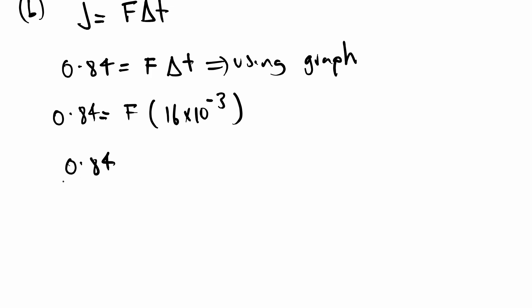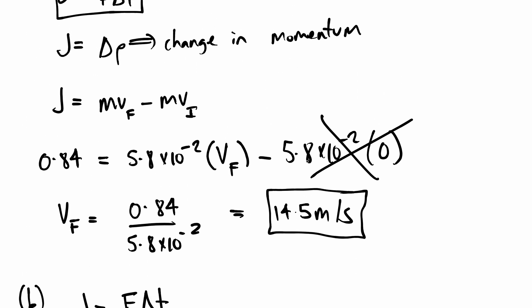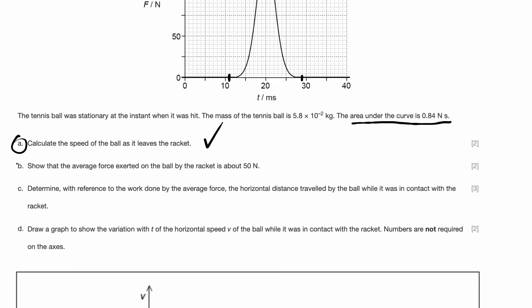I know 0.84 is equal to F times T, I can write 16 × 10⁻³. Why negative 3? Because it's in milliseconds, I need it in seconds. If I put this in my calculator, 0.84 divided by 16 × 10⁻³, I get my answer to be about 52.5 Newtons, which is approximately 50 Newtons. Hence, that's what they wanted us to show. And we've shown it. That's part B complete.